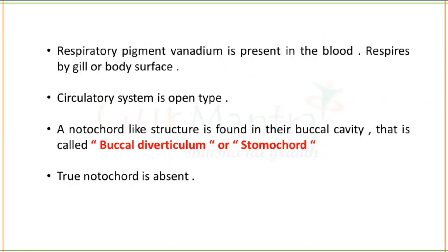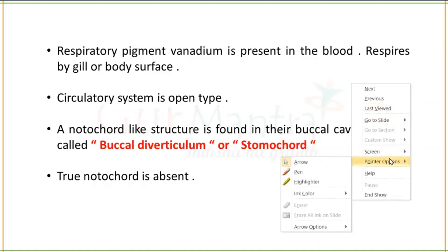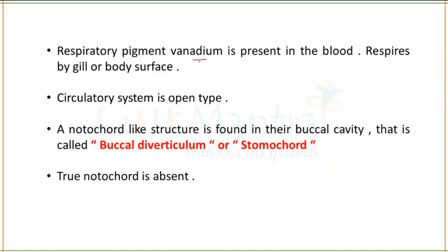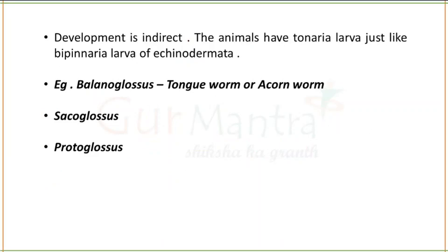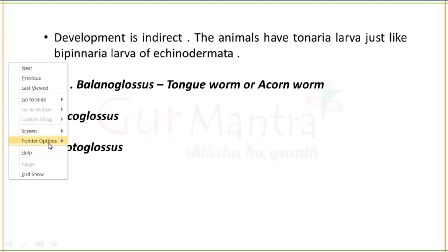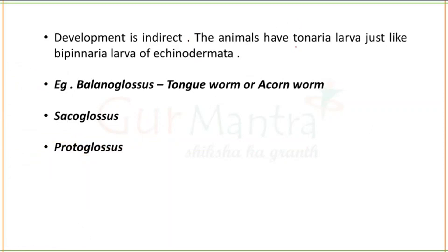The respiratory pigment present in the blood here is vanadium — remember the name vanadium as it has been asked in exams. Respiration is by gills or body surface. The circulatory system is open type. A notochord-like structure is present in the buccal cavity — this is called the buccal diverticulum or stomochord. True notochord is absent; it is just a notochord-like structure. Development is indirect type, and the animals have Tornaria larva, similar to the Bipinnaria larva of Echinodermata.